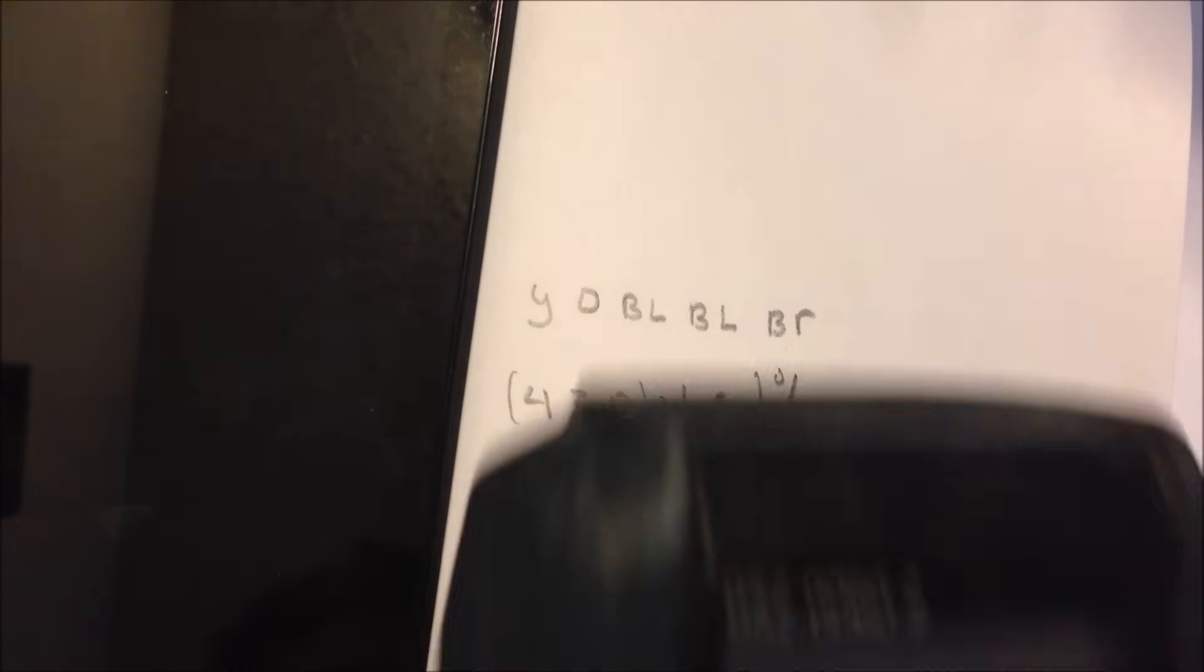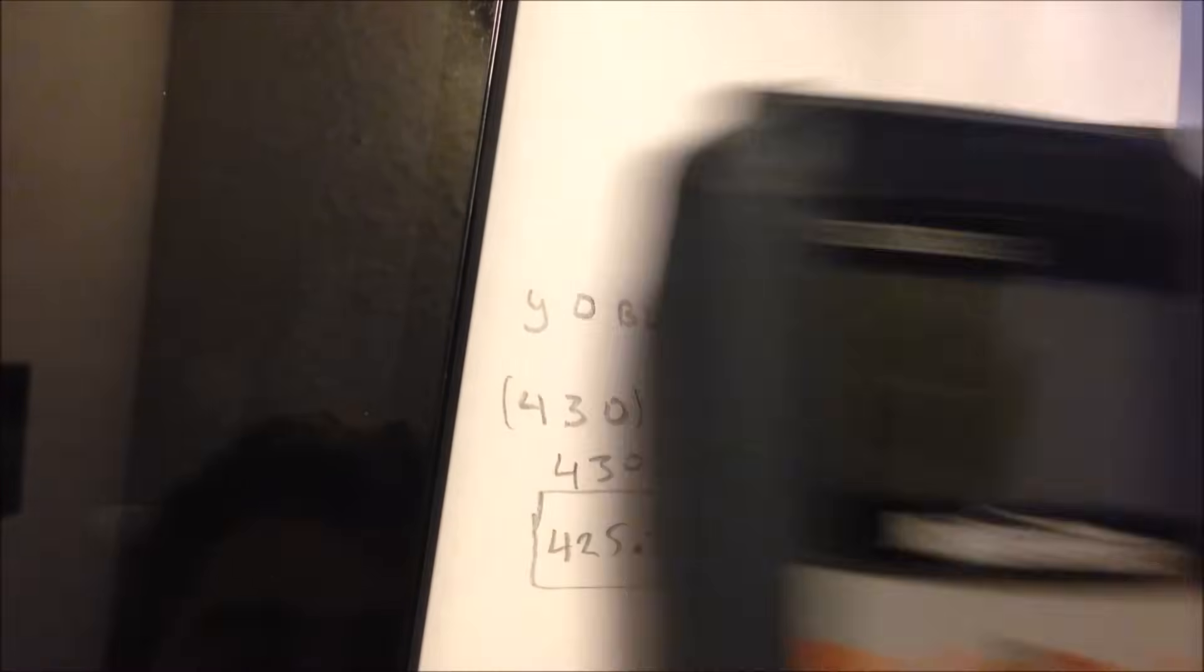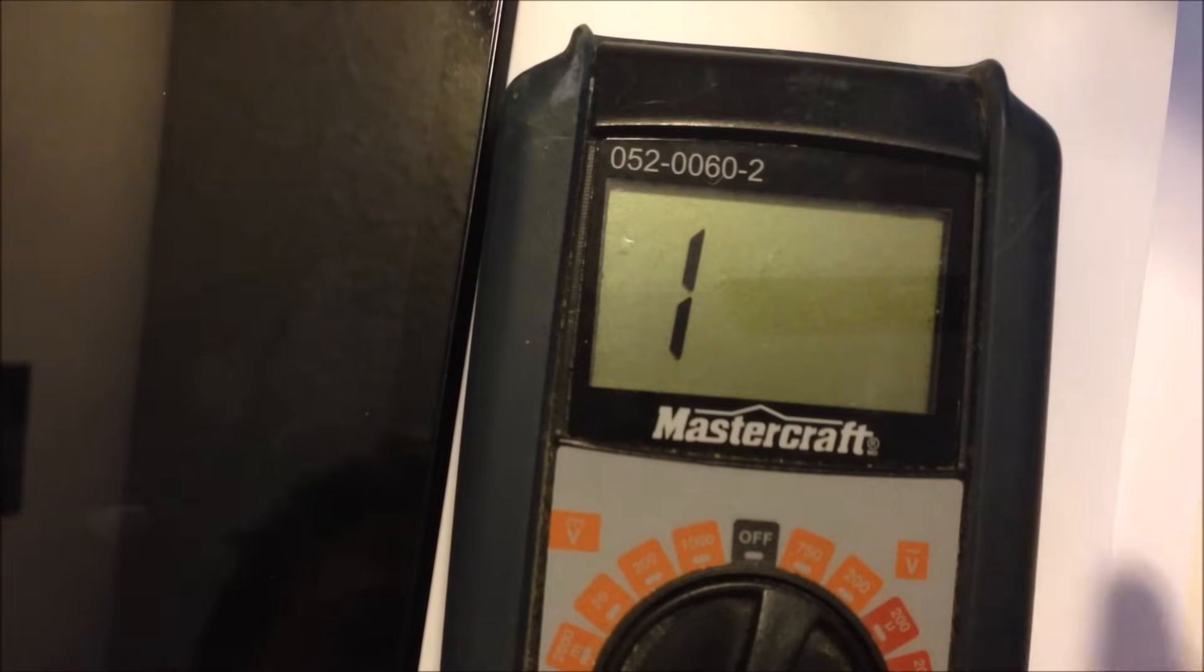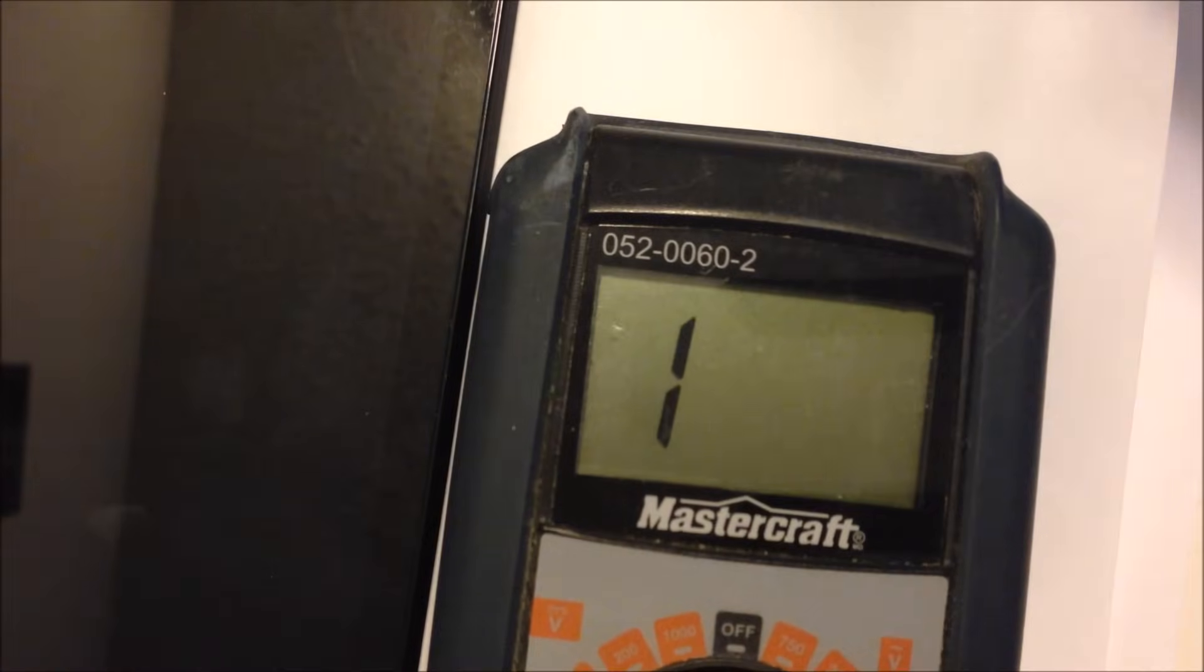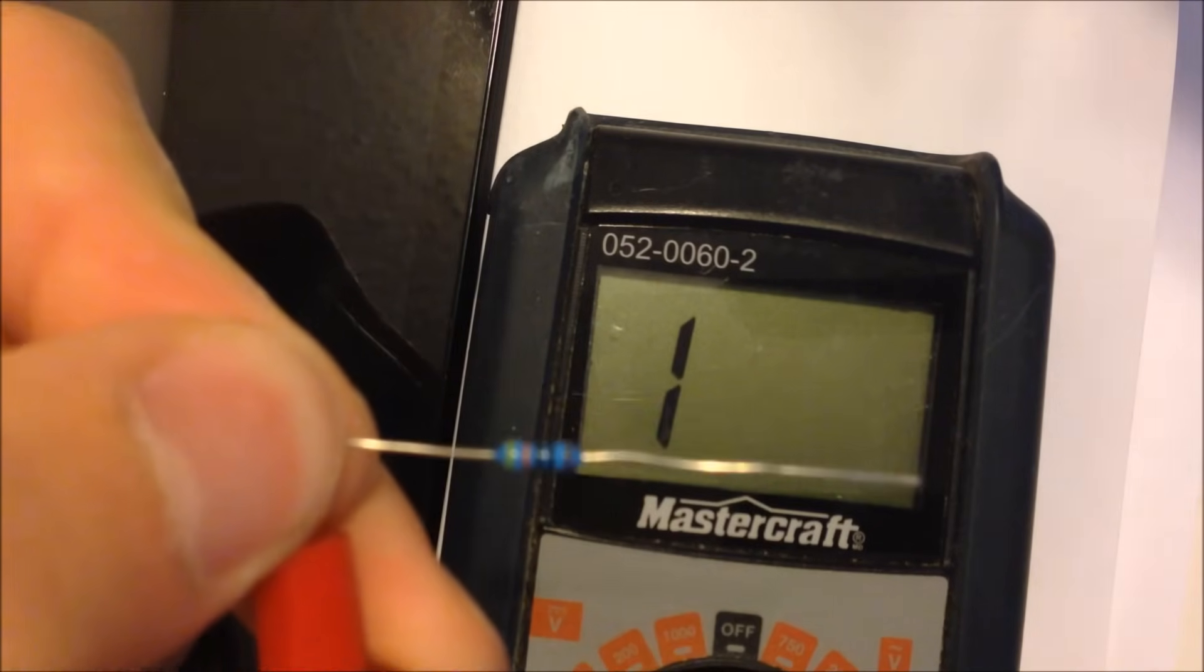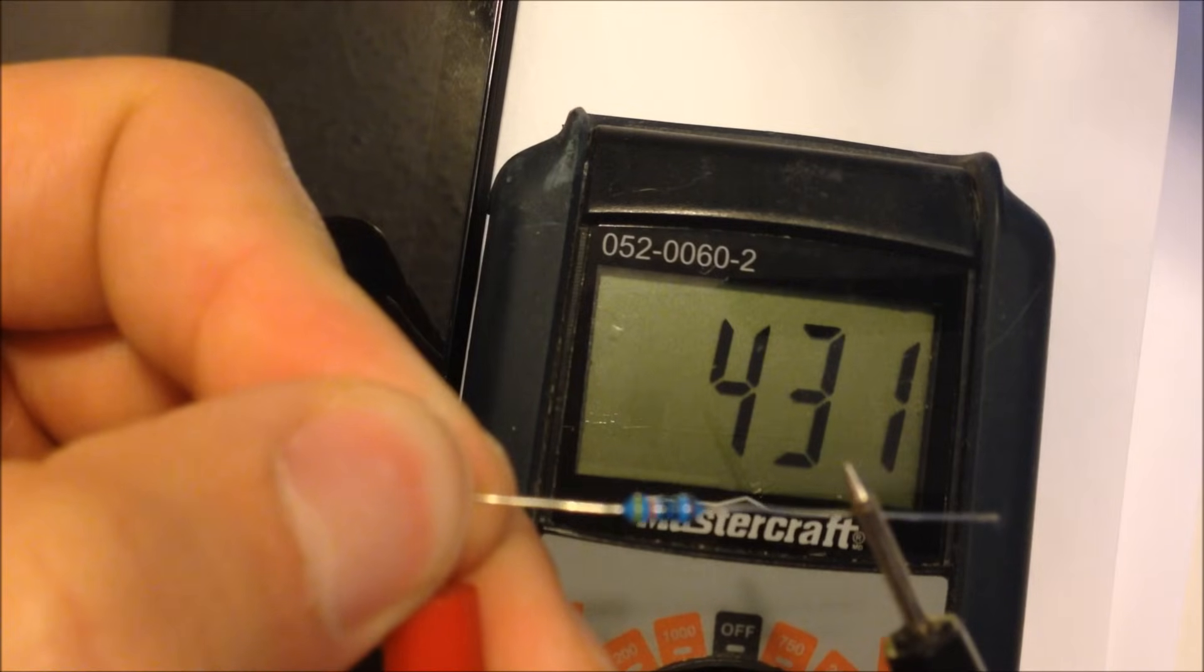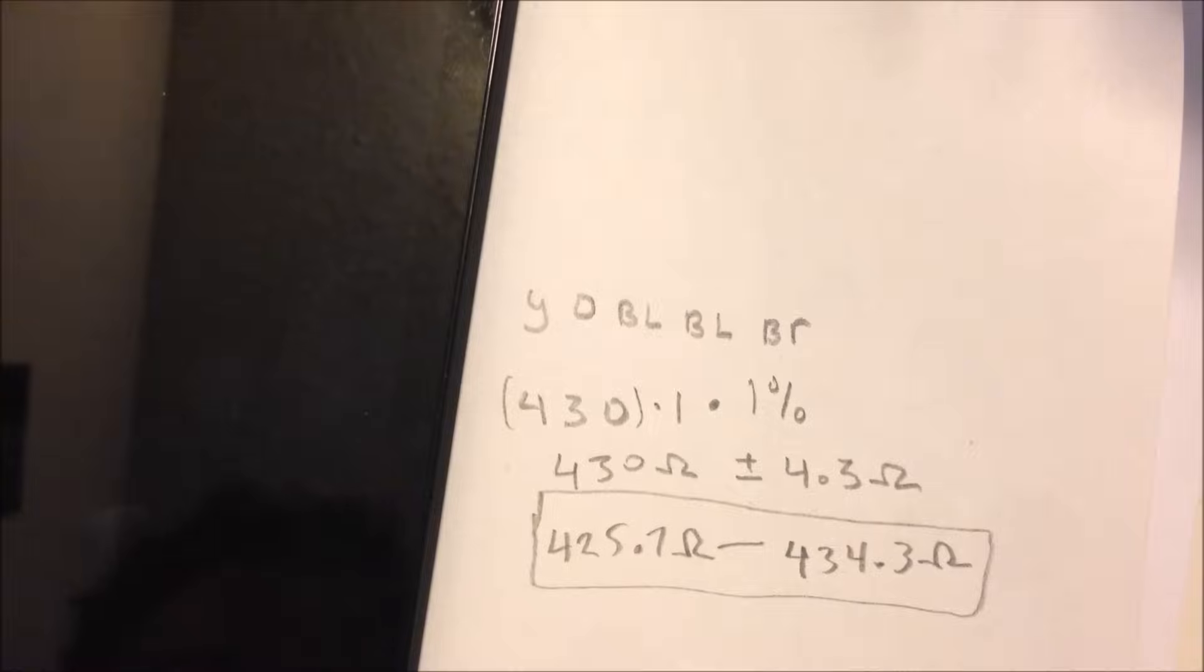So we'll just get the multimeter out here again. We'll set it to the 2,000 mark because that's the next available scale. 200 is not going to be enough. So we'll just put one lead on one side of this resistor here and the other lead on the other side, and we get 430 ohms, which is in our range here.